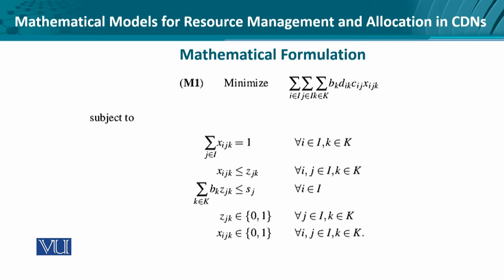This is the mathematical formulation — it is actually an integer linear program. It is an optimization problem where we would like to minimize the overall cost, so it is an objective function we want to minimize. This has some constraints. The constraints are determined by x,i,j,k — we are interested in summing up the total cost for the object to be served by the nearest server. The variable z,j,k will have either a zero or one value depending on whether that particular object was served by a certain server or not.